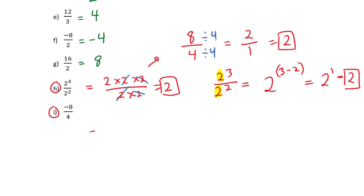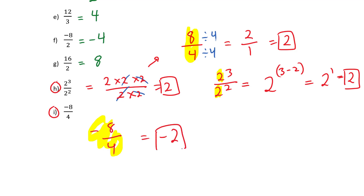For I: minus 8 over 4. There's no point redoing it — I have basically already done it. The only difference is the answer would be minus 2, not positive 2.